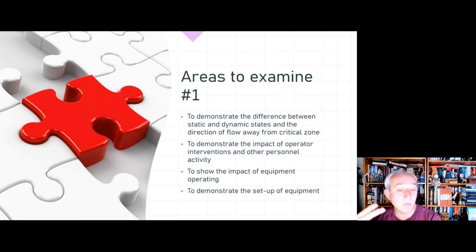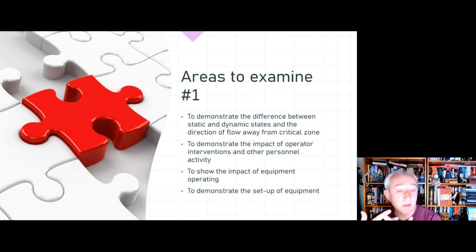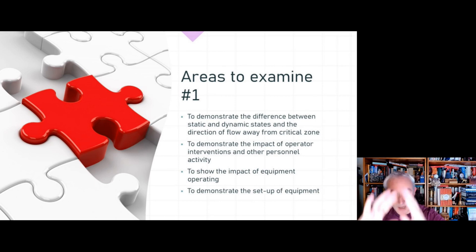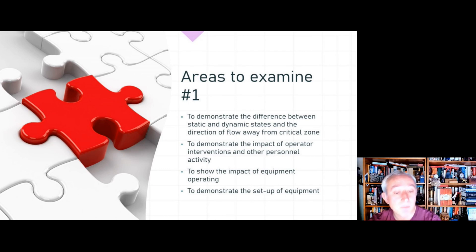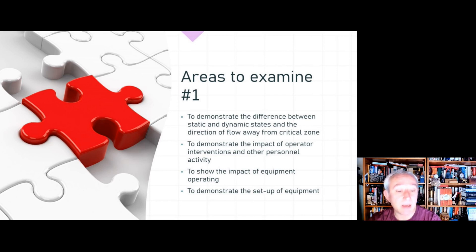Some examples of what to examine: we want to demonstrate the difference between an at-rest state and an in-use state, and the direction of unidirectional flow in relation to the critical zone. Ideally we want to see it carrying particles away from the objects we're most concerned about. We also want to demonstrate the impact of operator interventions and other personnel activity, and to show the impact of how equipment operates.